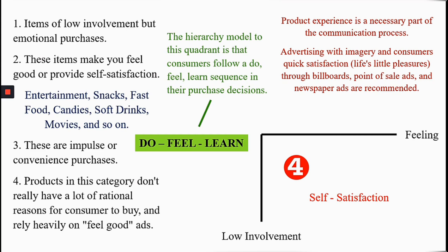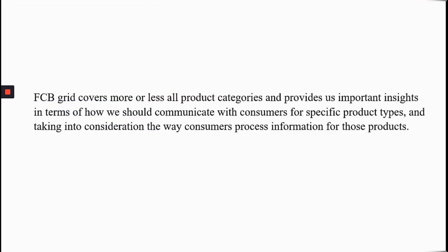The FCB Grid covers more or less all product categories and provides important insights into how we should communicate with consumers for specific product types, taking into consideration the way consumers process information for those products. This concludes the topic of the FCB Grid, which we use for the communication process. In the next video, we will discuss the topic of marketing communications budget.